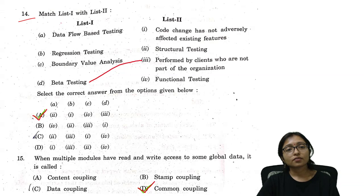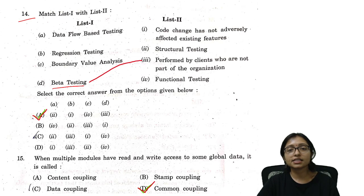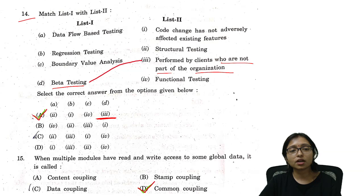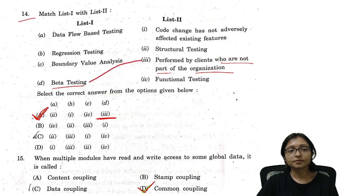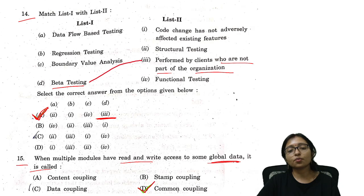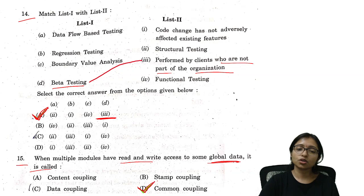Question 14: Match the following — beta testing is performed by the client, not part of the organization, so D matches with 3. Using this match alone you can identify option A as the correct answer. Question 15: When multiple modules read and write access to global data, that is called common coupling — a direct question. Option D is the correct answer.